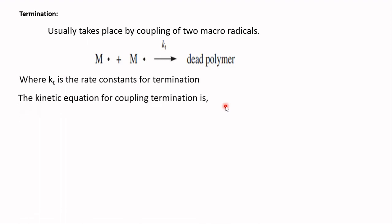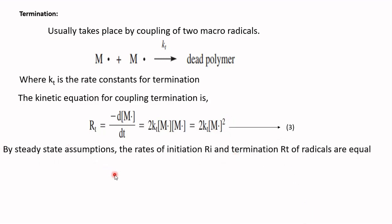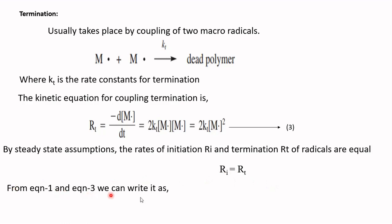The kinetic equation for coupling termination is: r_t = minus d[M•]/dt = 2·k_t·[M•]^2, which is equation 3. By the steady-state assumption, the rate of initiation and the rate of termination of radicals are equal, so r_i = r_t.